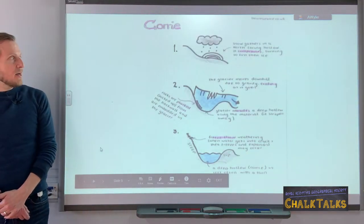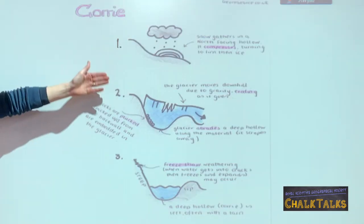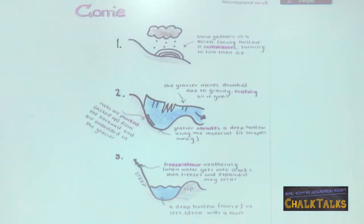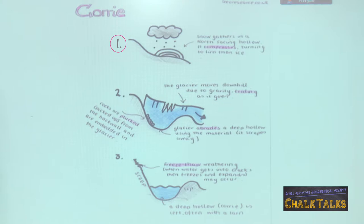Here we can see a diagram that outlines a Corrie done through three steps. In the first step we can see the glacier actually building in a hollow prior to the ice age. It is snowing, the snow is building up and compressing into ice. The weight of gravity and of the glacier itself will cause that ice to start moving. This occurs at the start of an ice age and in a hollow.